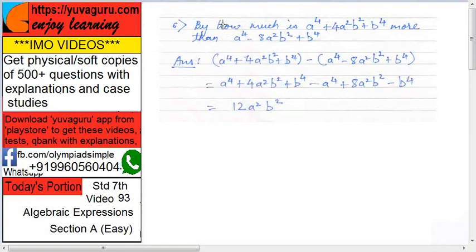By how much is a raised to 4 plus 4a² b² plus b raised to 4 more than a raised to 4 minus 8a² b² plus b raised to 4? See here, if I ask you, by how much is 8 more than 3? What will you do? 8 minus 3. Similar logic, by how much is this more than this, then this minus this.